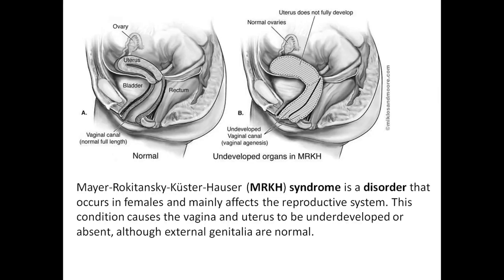This is the difference between a normal uterus and underdeveloped organs in MRKH syndrome. MRKH — Mayer-Rokitansky-Küster-Hauser syndrome — is a disorder that occurs in females and mainly affects the reproductive system. This condition causes the vagina and the uterus to be underdeveloped or absent, while the external genitalia remain normal.